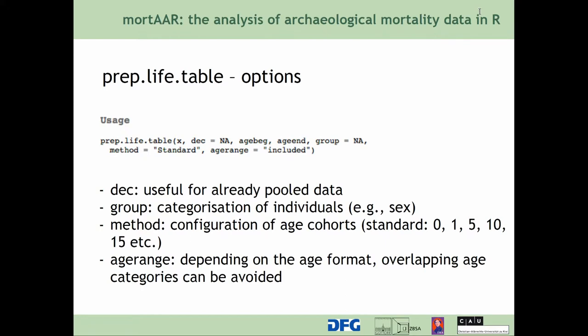The prep_life_table function is quite straightforward. You can input your original data, or enter data if you have already pooled populations with age class and number of individuals. You can group your data — usually by sex: male, female, undetermined — but you can also use things like rich graves or poor graves, or whatever grouping you wish. You can choose which method you want to calculate the age cohorts with. The standard method uses 0–1 year, then 5-year intervals going on. But if you have specific standards like juvenile, adult, and so on with different age groups, you can implement that here.